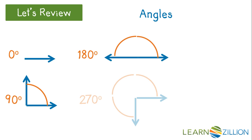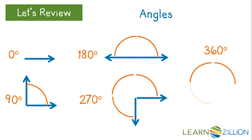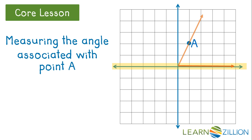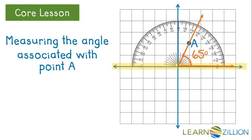Let's review angles. For any given point in a plane we can create an angle associated with that point. For this lesson we will create angles using the origin as the vertex and the x-axis as the initial side. To measure distance, point A is two units up and one unit to the right from the origin. To find the angle measure we'll create an angle using the origin and the x-axis, then use a virtual protractor to measure. We find that it's 65 degrees.